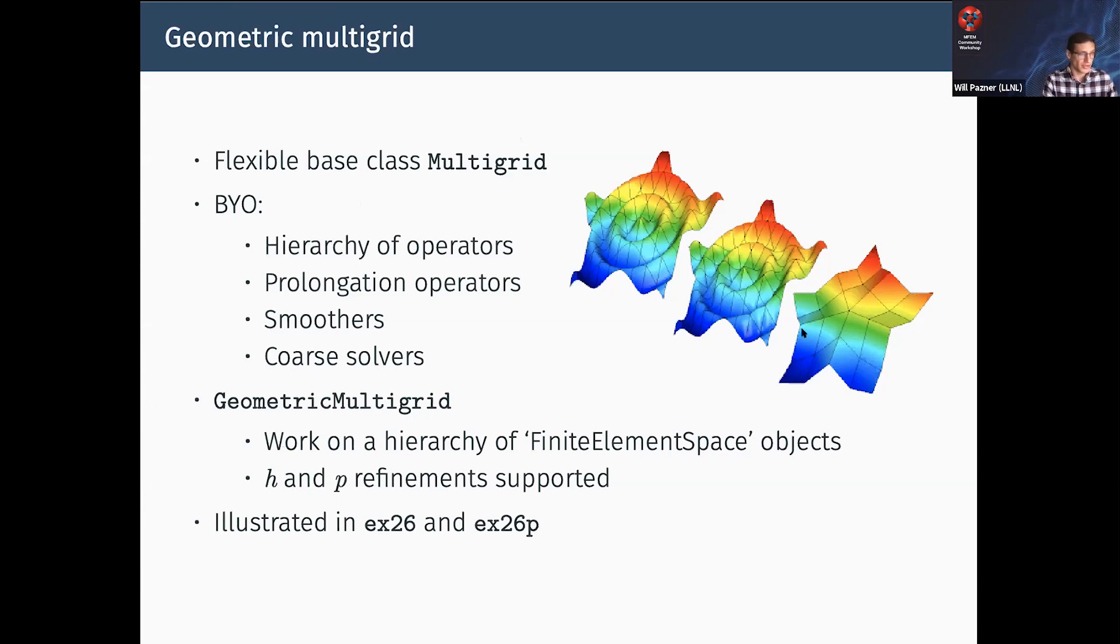In this picture, you start with a coarse mesh with a low-order space, do one geometric refinement and then one P refinement. The multigrid works on those types of hierarchies, and it's illustrated in our Example 26.